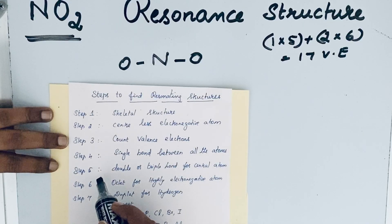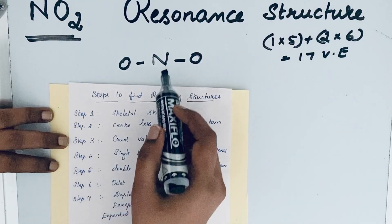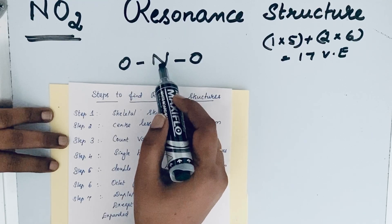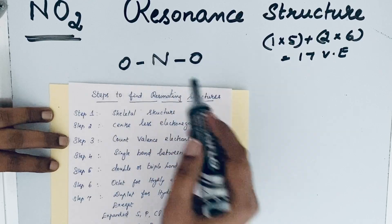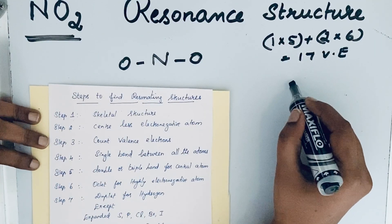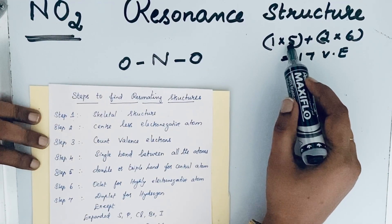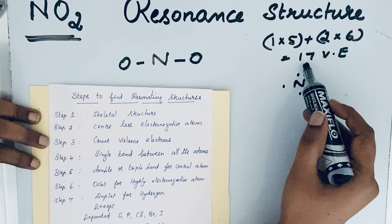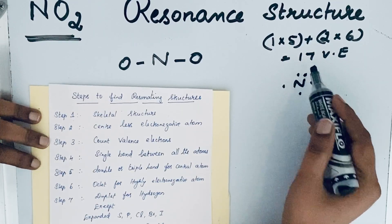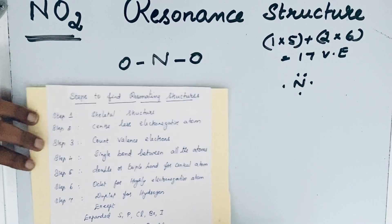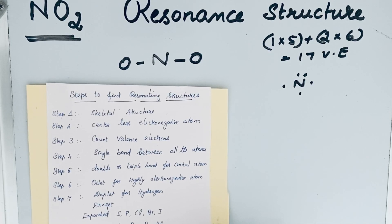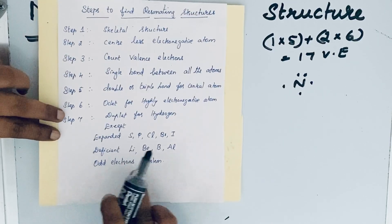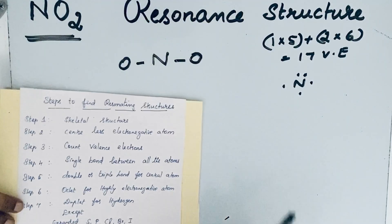Step 5: draw a double or triple bond for the central atom to make it stable by giving it an octet configuration — that means 8 valence electrons. However, the total valence electrons here are 17, which is an odd number. For odd electron systems, there are exceptions and they do not follow the octet configuration. NO2 falls under the odd electron system.